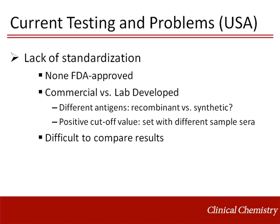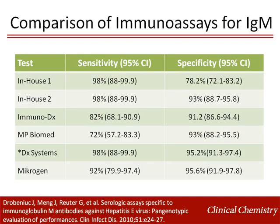Labs may use different antigens in their assays, different positive cutoff points, et cetera. A recent study from the CDC comparing five immunoassays illustrates the wide variation in sensitivities and specificities of ELISA testing for IgM when testing serum from patients with known hepatitis E versus patients with hepatitis A, B, or C. Sensitivities range from 72% to 98%, and specificities from 78% to 95%, showing that reproducibility of this testing has not been optimized.